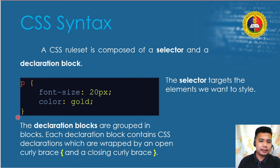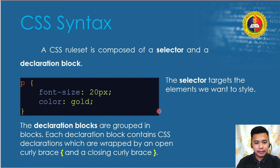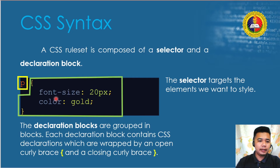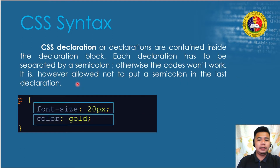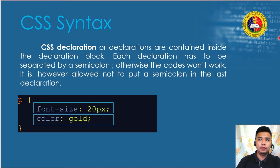Let's talk about CSS syntax — how we write CSS. A CSS ruleset is composed of a selector and a declaration block. The selector targets the element we want to style. The declaration block is wrapped by open and close curly braces. Each CSS declaration inside the block must be separated by a semicolon; otherwise the code won't work. It is, however, allowed not to put a semicolon on the last declaration.